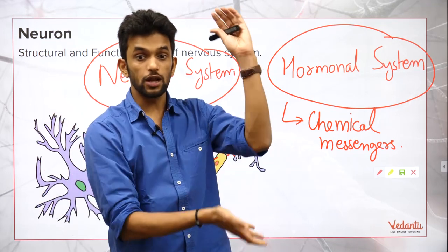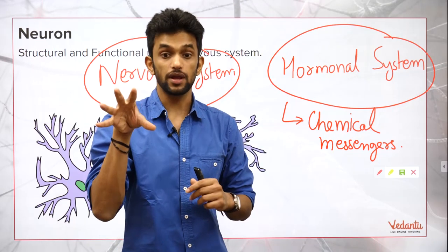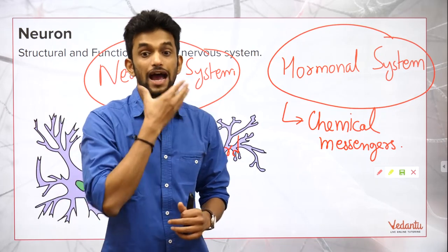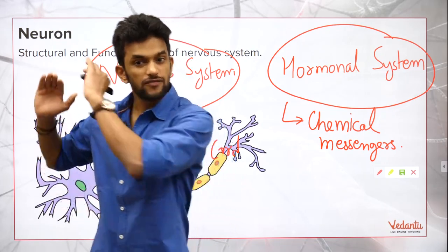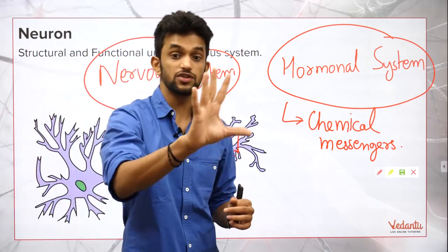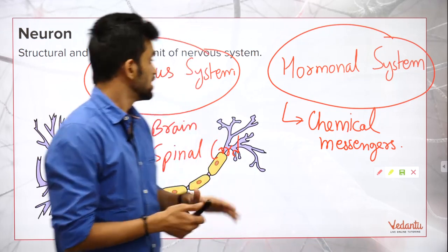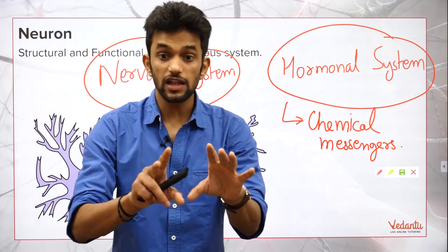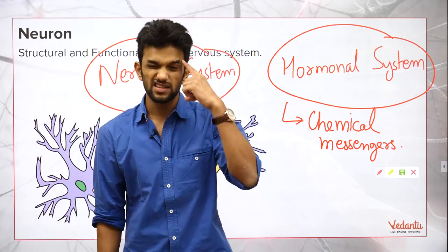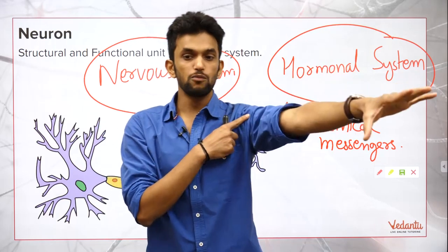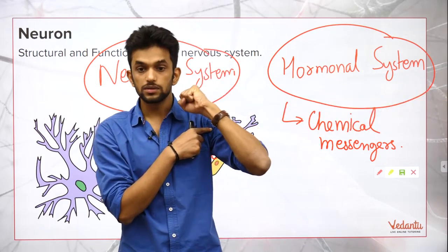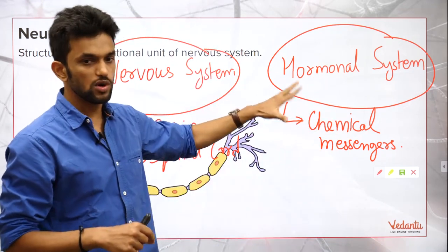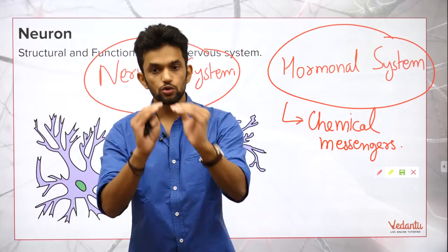I grow up to a particular height because of chemicals produced in my body. I sleep at night and get up in the morning because of chemicals produced in my body. I'm getting a beard whereas my female colleagues are not, because of different chemicals. In the nervous system, messages are transferred as electrical impulses — very fast. The hormonal system is very slow. We will study the differences.